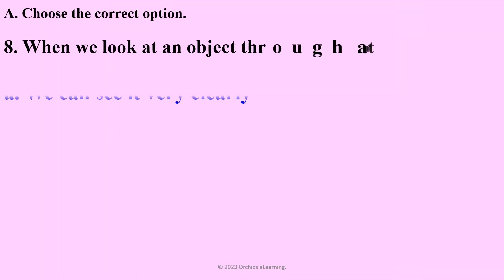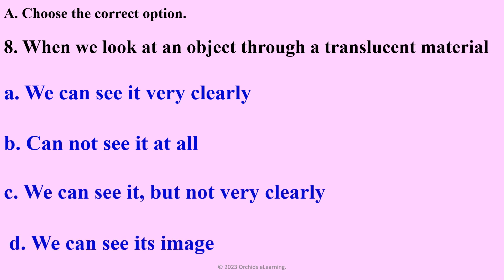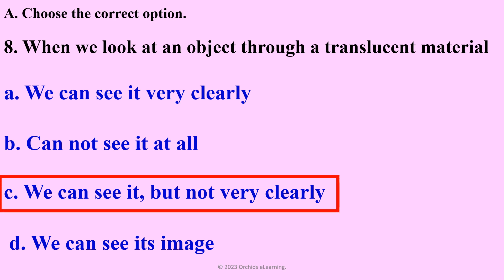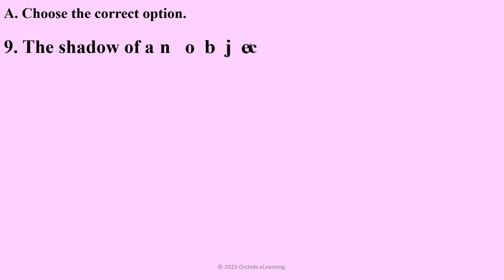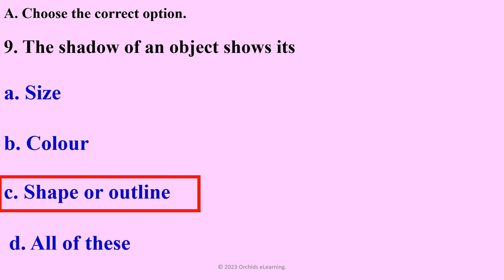When we look at an object through a translucent material — answer: C — we can see it but not very clearly. The shadow of an object shows its — answer: C — shape or outline.